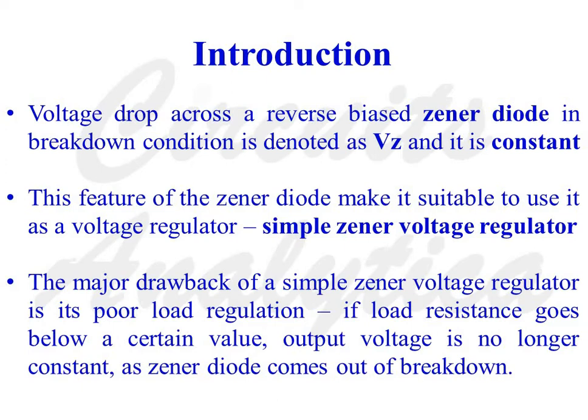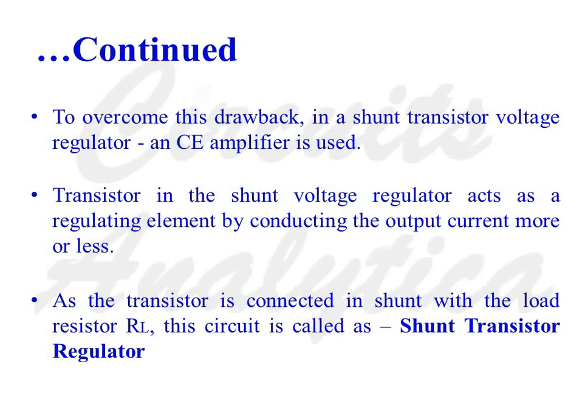The major drawback of a simple zener voltage regulator is its poor load regulation. If load resistance goes below a certain value, output voltage is no longer constant as the zener diode comes out of breakdown. To overcome this drawback, in a shunt transistor voltage regulator, a common emitter amplifier is used. The transistor acts as a regulating element by conducting the output current more or less. As the transistor is connected in shunt with the load resistance RL, this circuit is called a shunt transistor voltage regulator.